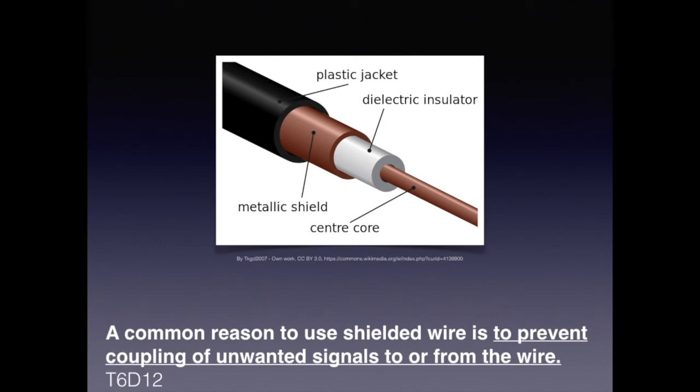A lot of cables used for antennas and special sensitive circuitry are shielded. That means they have a metal sheath around the central core or primary conductor, separated by a dielectric insulator so that it doesn't short. For the exam, we simply need to know a common reason to use shielded wire is to prevent the coupling of unwanted signals to and from the wire.